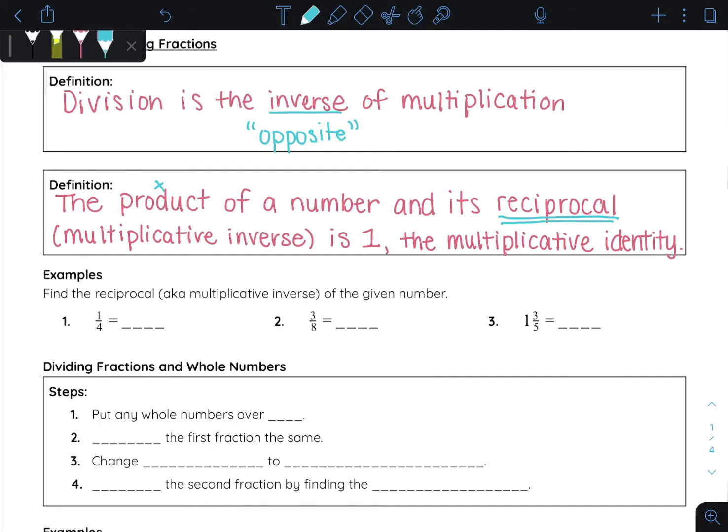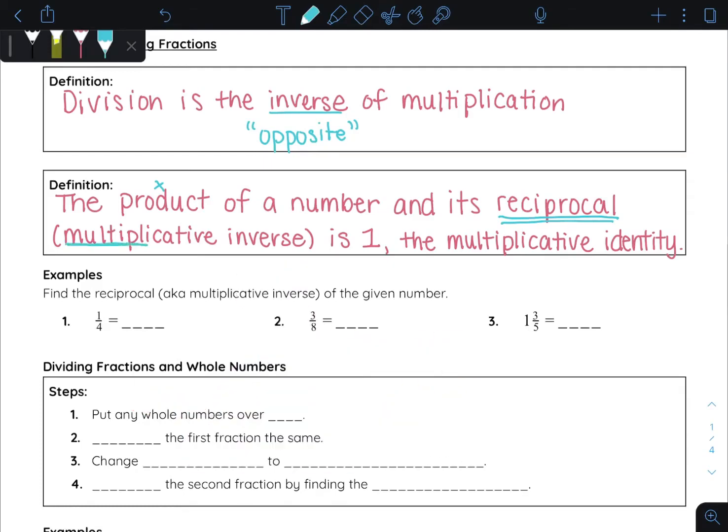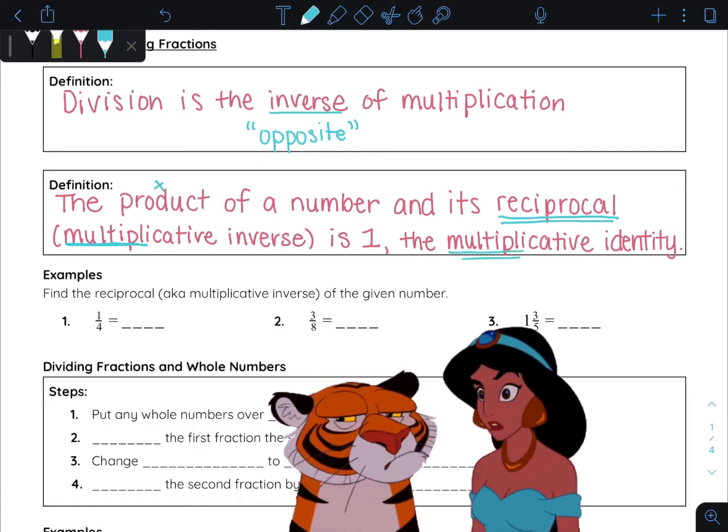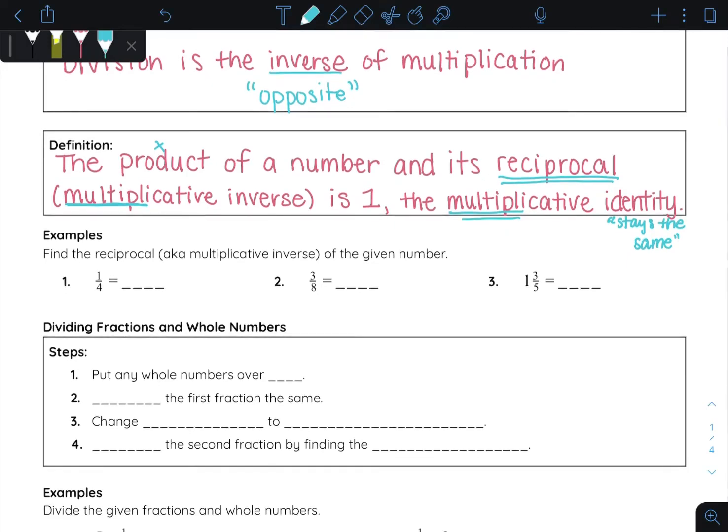So the product of a number and its reciprocal, also known as the multiplicative inverse, is one. And one is the multiplicative identity, meaning one is the number that keeps everything the same. Like if you multiply or divide by one, nothing happens. So let's see what an example is of this reciprocal idea.